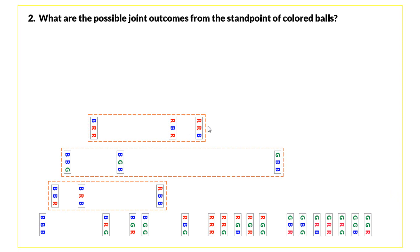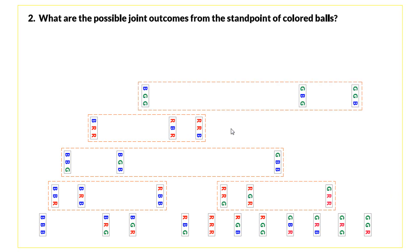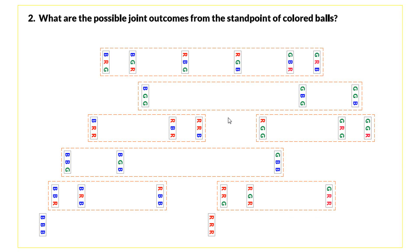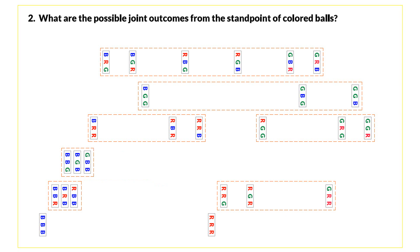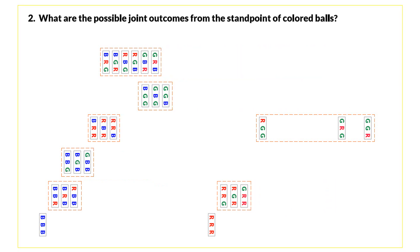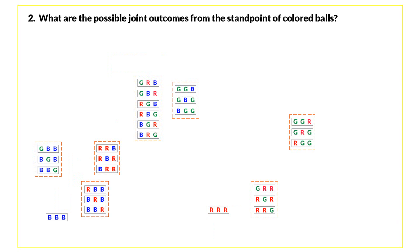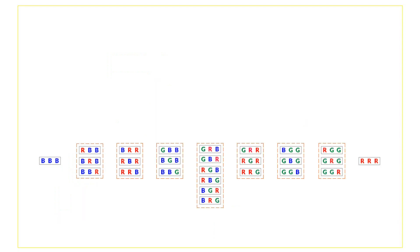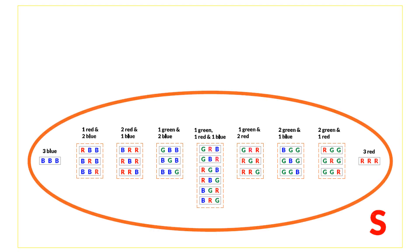We continue grouping: two red and one blue in another subset, and so on, until everything is grouped together. We then name each group and note that the union of all these subsets forms the sample space. Each subset is a joint event, and their union creates the sample space — forming a partition.